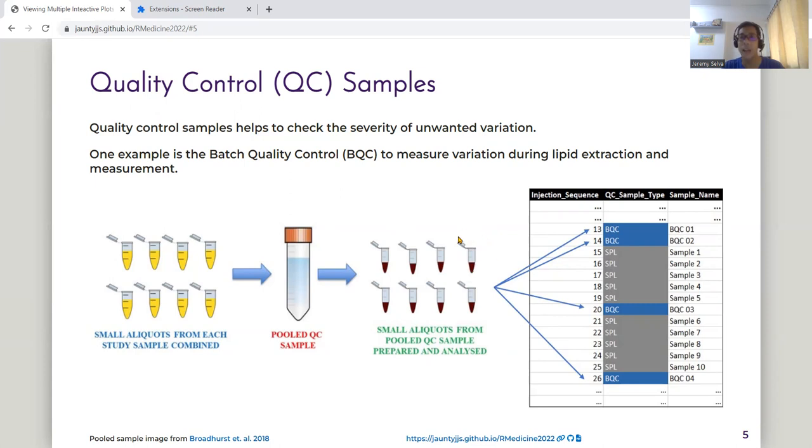These little aliquots here are the BQCs. They can be placed before the first sample, at regular intervals in between the samples, as well as after the last samples.